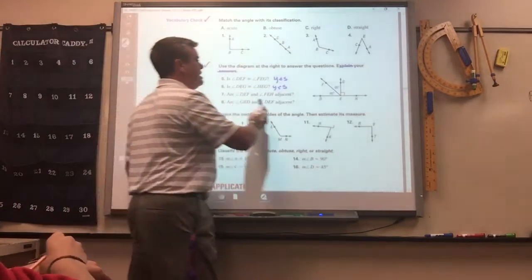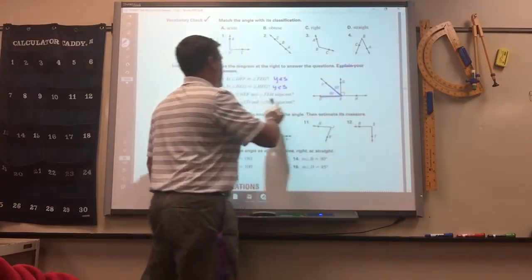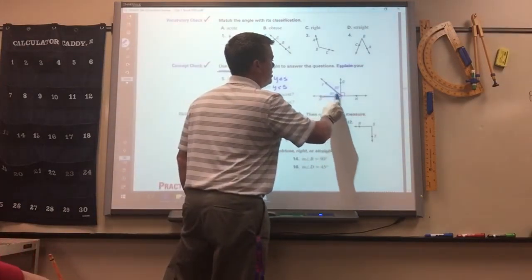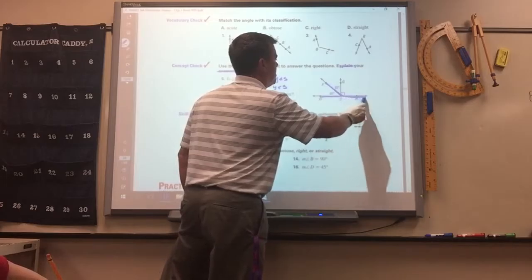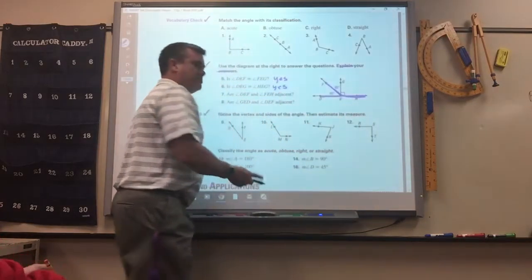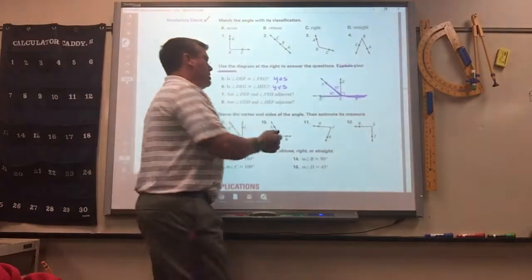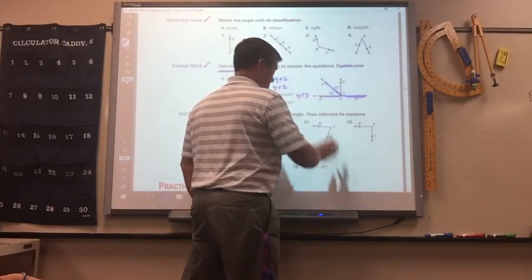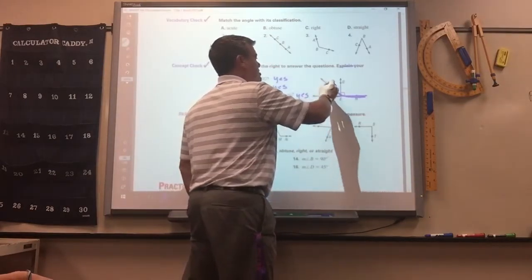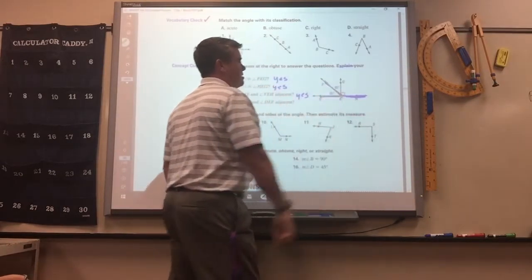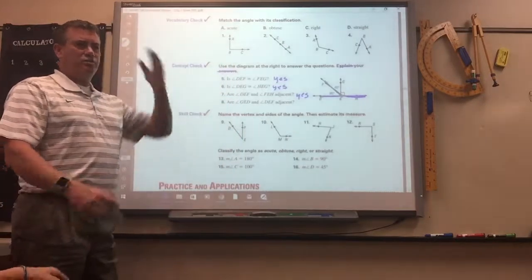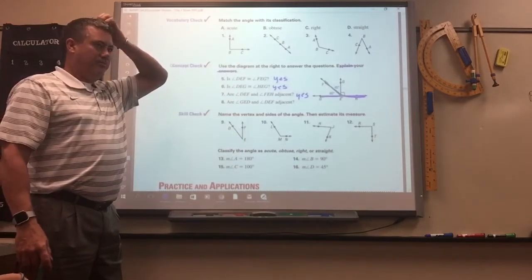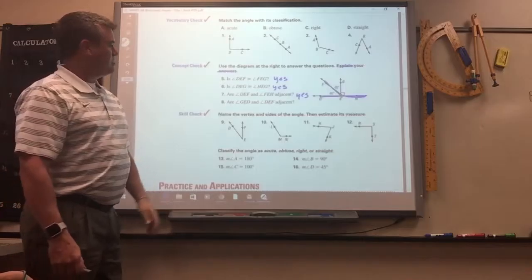Seven are angle DEF and FEH adjacent. Why is it yes? Because they're right next to each other. They share a side, and they share a vertex. They're right next to each other. Is this page 29? Yes.